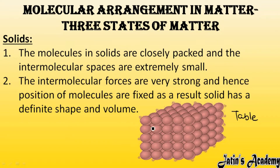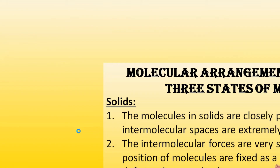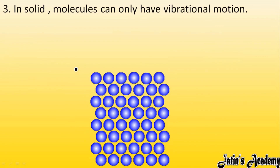For example, consider a table — particles are very close to each other, having too much force of attraction. Because of this, solids have a definite shape; we cannot change the shape of the table. They also have definite volume, meaning the space occupied by the solid remains the same.